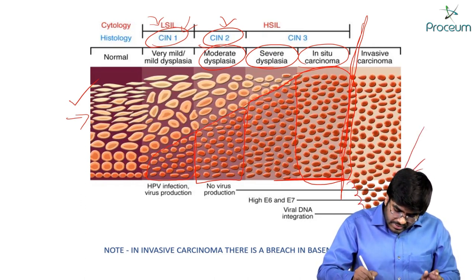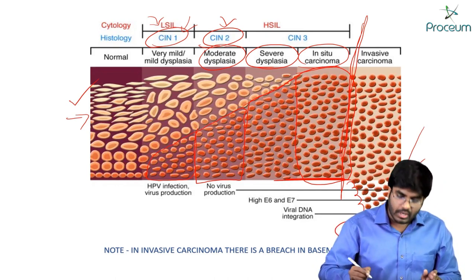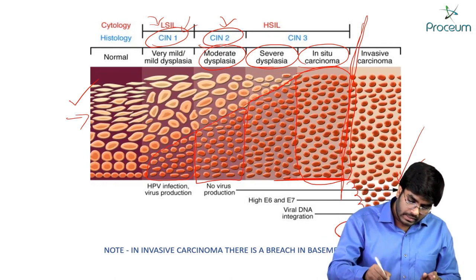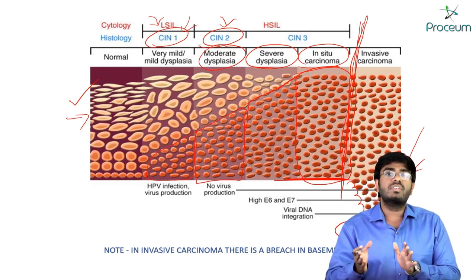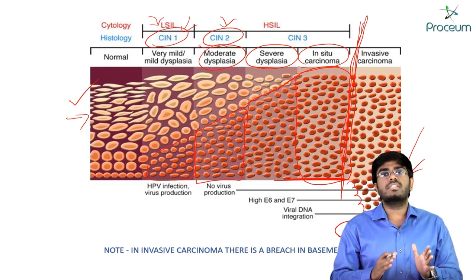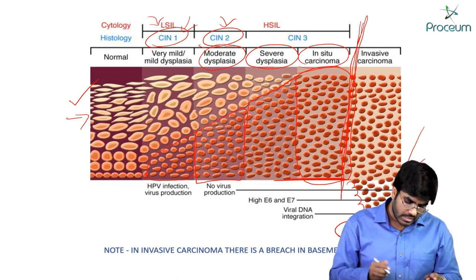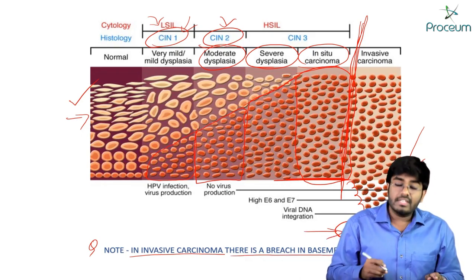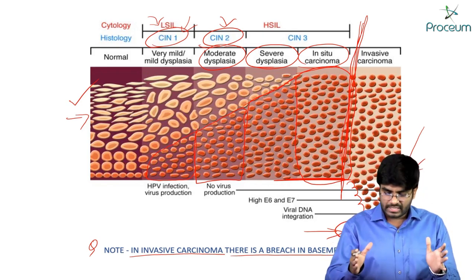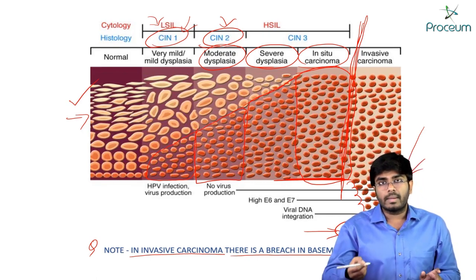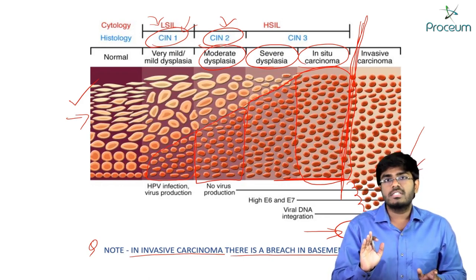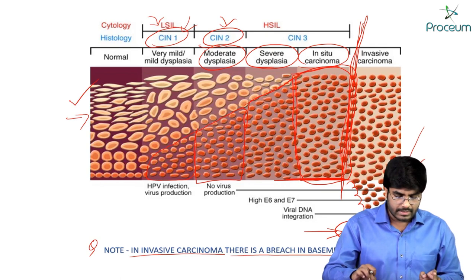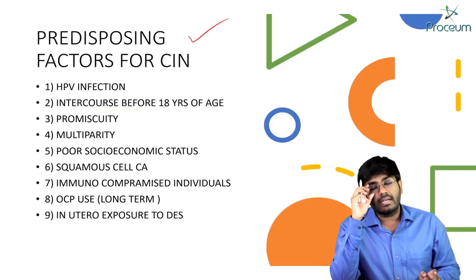Once the basement membrane is broken, the abnormal epithelial cells will start to metastasize — that is known as micro-invasive carcinoma, which is the first stage of cervical cancer. In invasive carcinoma there is a breach in the basement membrane, but in carcinoma in situ there is no breach — only the full thickness of the epithelial lining is filled with dysplastic cells.